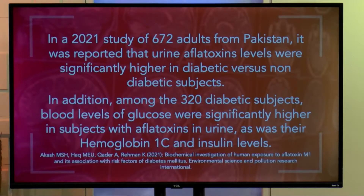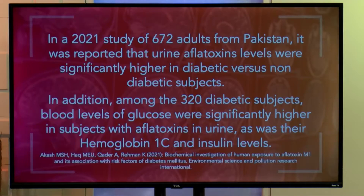We run to our doctor with liver cancer, and never once does the doctor think to ask: are you eating corn? Are you eating peanuts? Are you eating a lot of whole grains? In a 2021 study of 672 adults from Pakistan, urine aflatoxin levels were significantly higher in diabetic patients versus non-diabetic people. Among 320 diabetic subjects, blood levels of glucose were significantly higher in subjects with aflatoxins in their urine, as was their hemoglobin A1C and insulin levels. They're eating aspergillus mold — it off-gasses a poison in your body called aflatoxin, known to induce hepatocellular liver cancer, and now linked to diabetes.